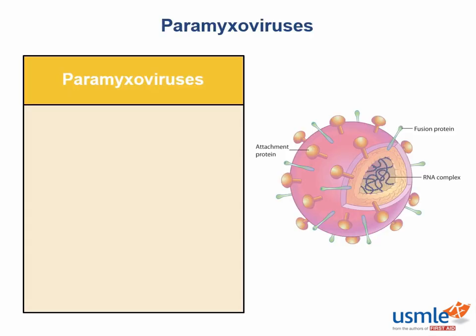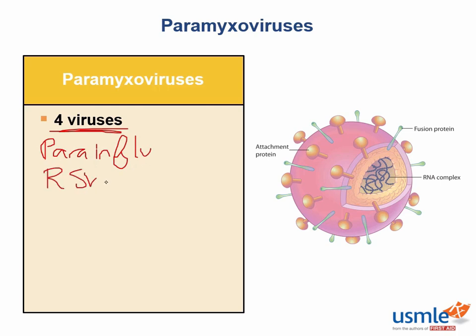Let's discuss the paramyxovirus family. The four viruses that make up the paramyxovirus family include the parainfluenza virus, the respiratory syncytial virus, the measles virus, and the mumps virus.